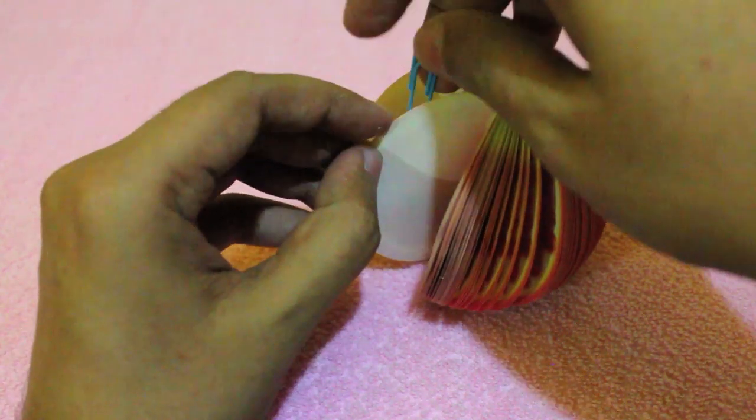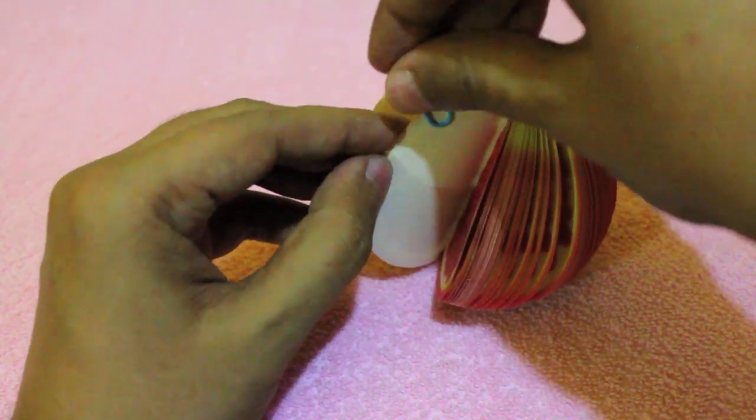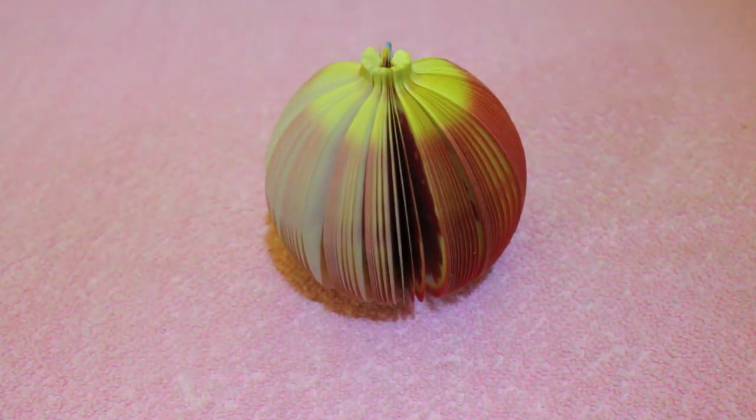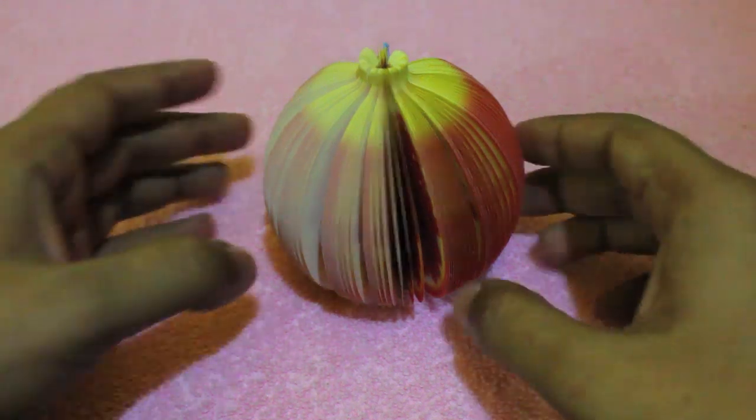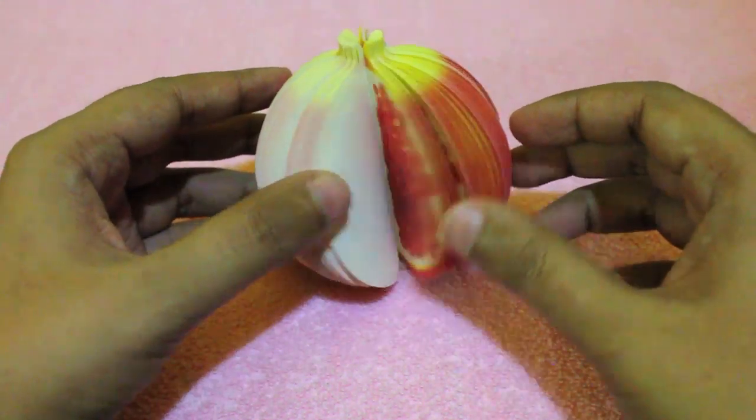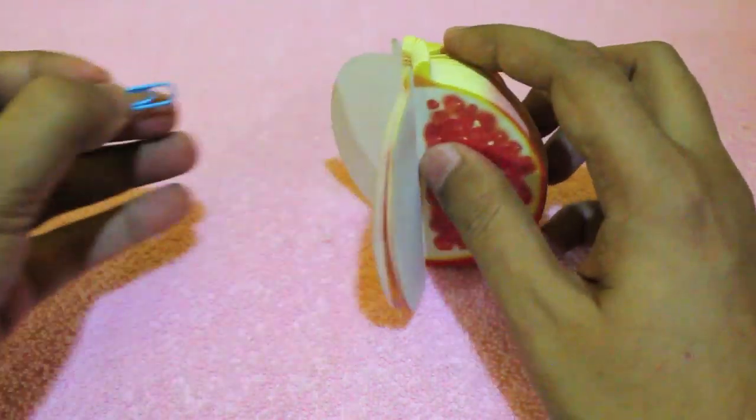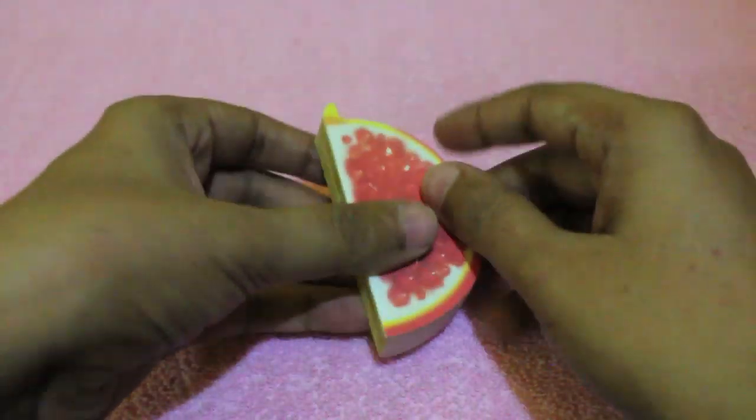Inside, the slices have printing of the seeds, so you can open anywhere and see the interior of the pomegranate.